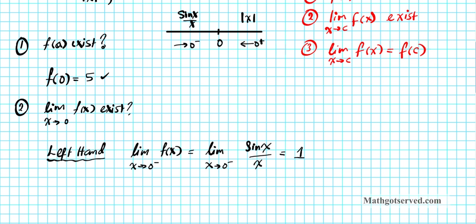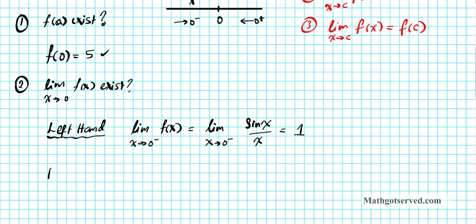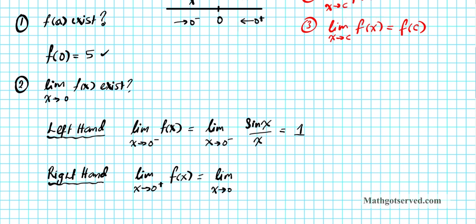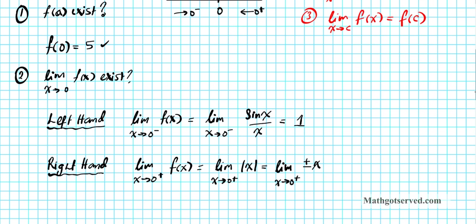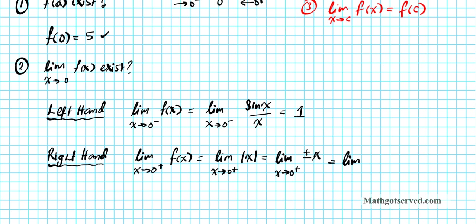Now for the right-hand limit: the limit as x approaches 0 from the right of |x|. We know that |x| for x > 0 can be written as simply x, so this becomes the limit as x approaches 0 from the right of x. By substitution, the limit is clearly 0.